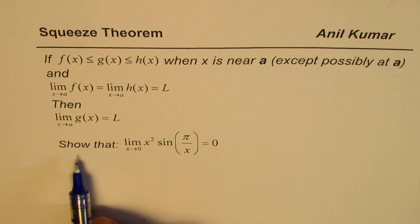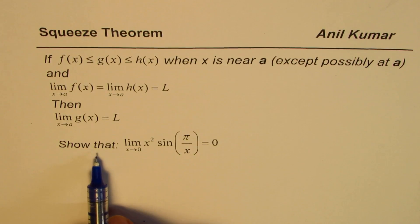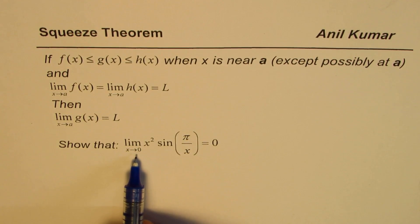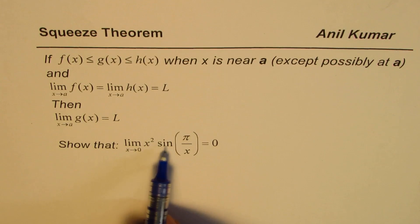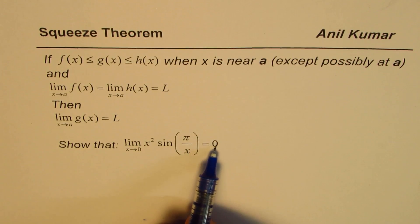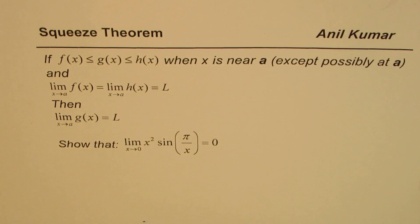We will take up an example to illustrate the same. The example here is to show that limit as x approaches 0 for x² sin(π/x) is equal to 0.